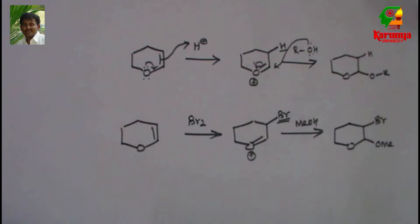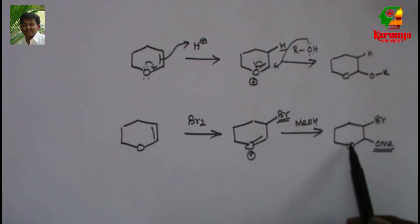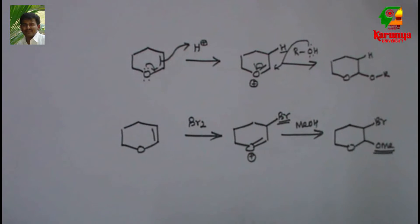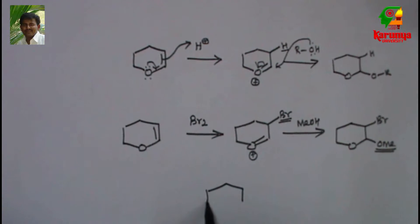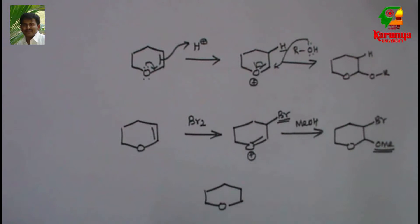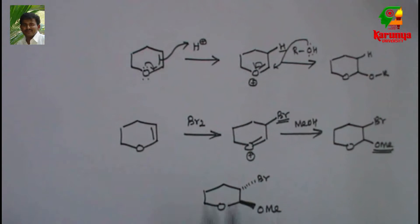So the regiochemistry: methoxy group adds to the carbon that contains oxygen. The stereochemistry is trans, as we have already seen. So the product that we get is trans, and OME is on the carbon which has oxygen.